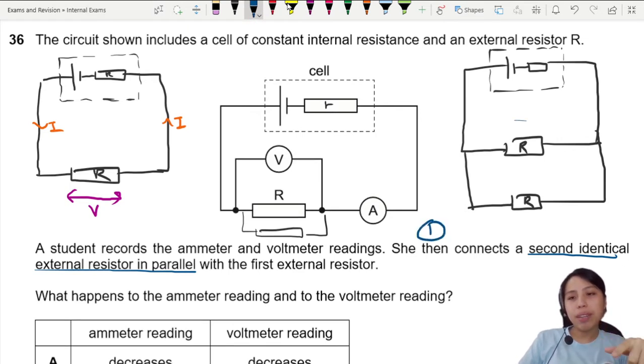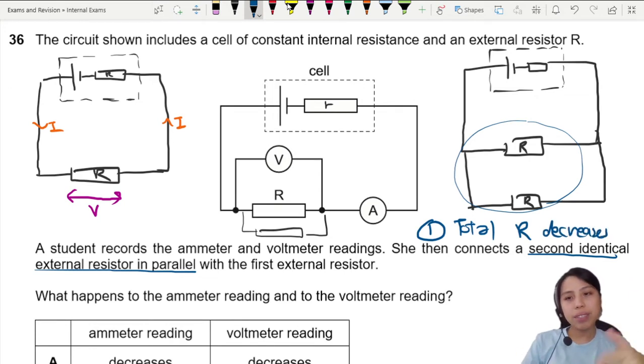When you add in parallel, these two in parallel, your total resistance of the whole circuit actually decreases. Add in parallel decreases, add in series increases. So because it's parallel, you decrease.